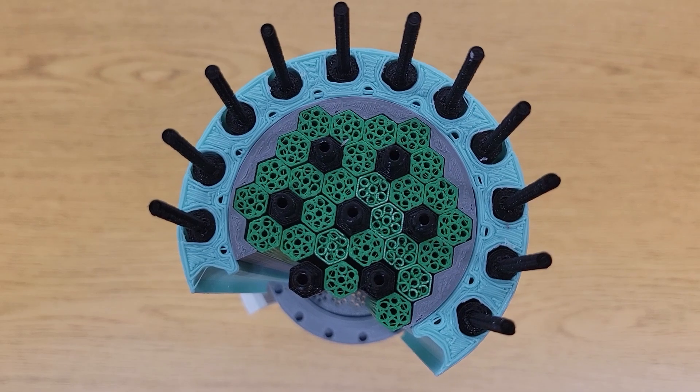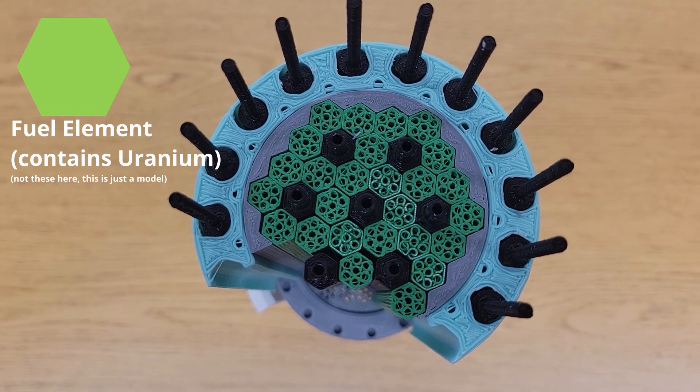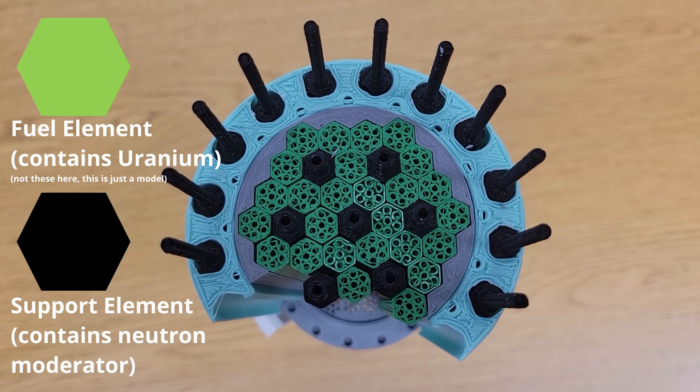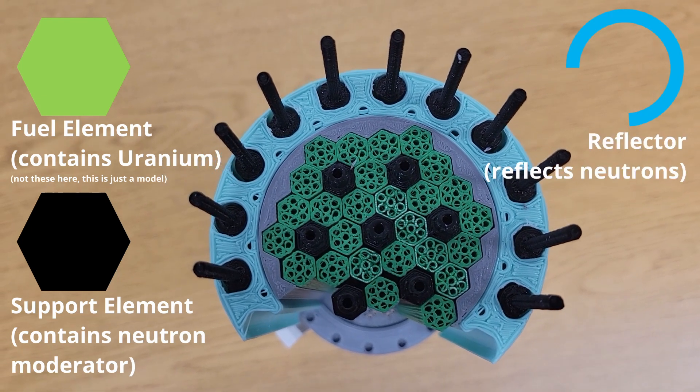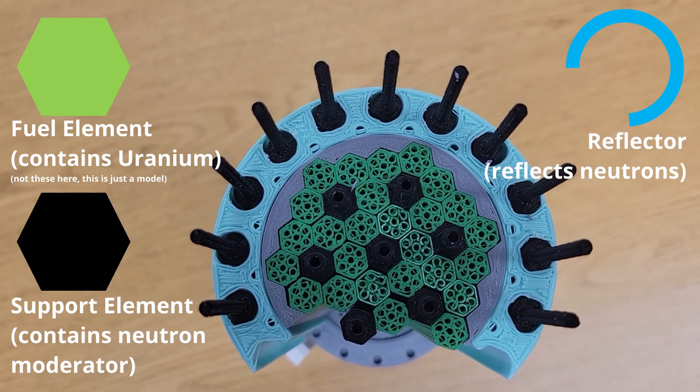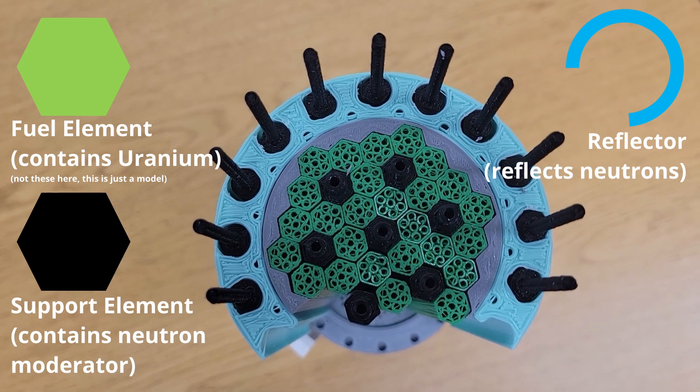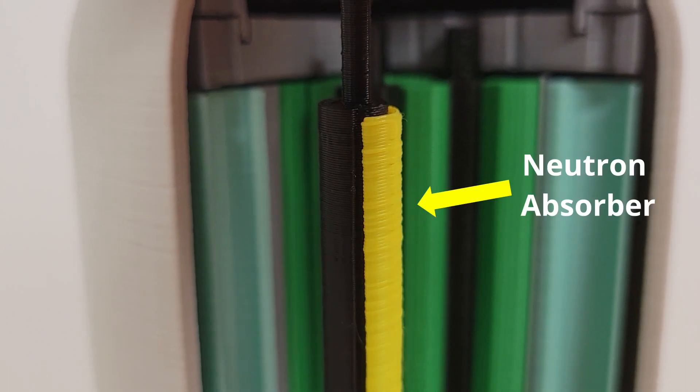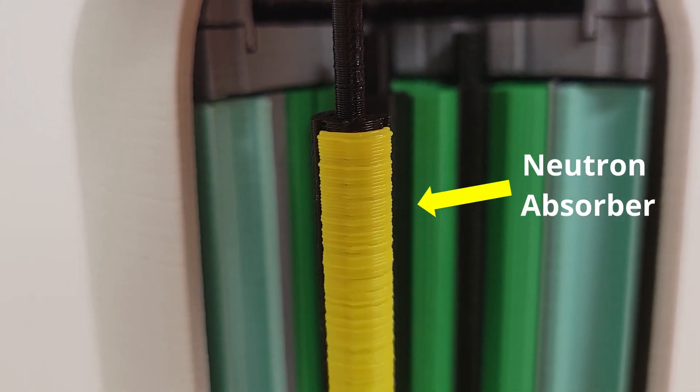The reactor itself consists of hexagonal fuel elements containing uranium, similarly shaped support struts to hold everything in place and moderate the reactions, a reflector to reflect neutrons emitted from the uranium back into the reactor, and control drums to control the nuclear activity in the reactor, which have a layer of neutron absorbing material covering part of their surface.